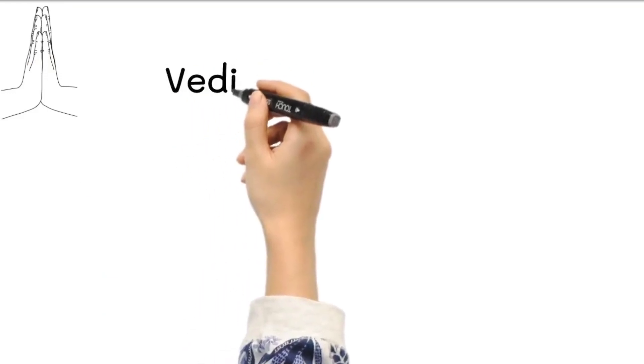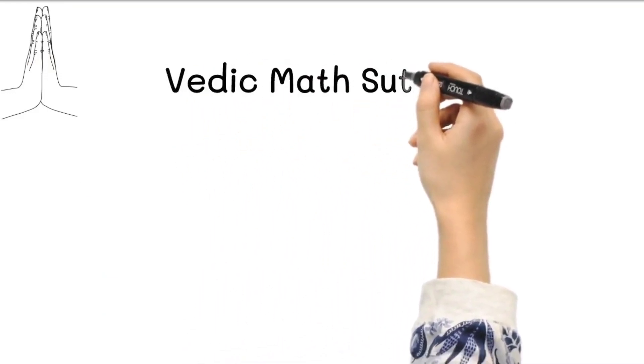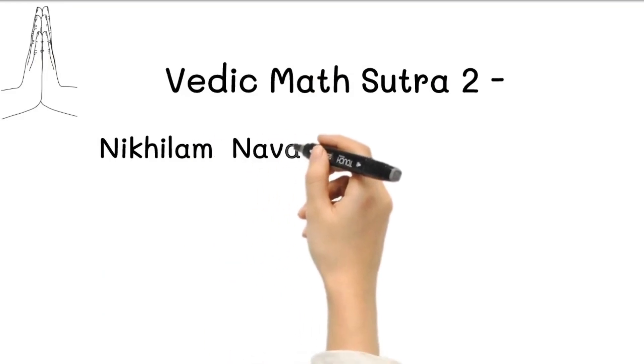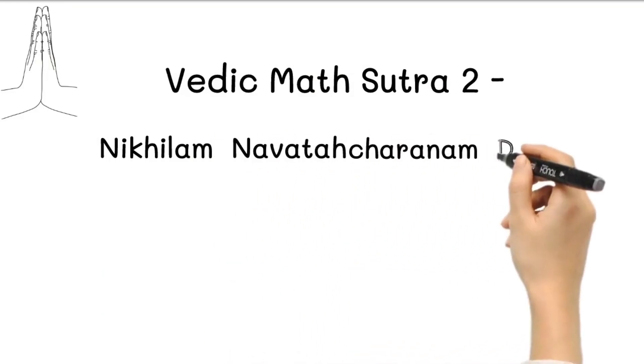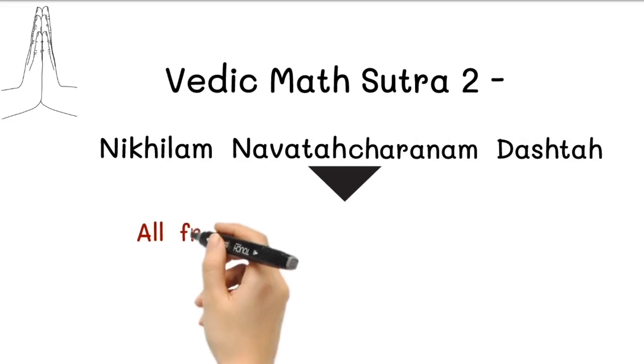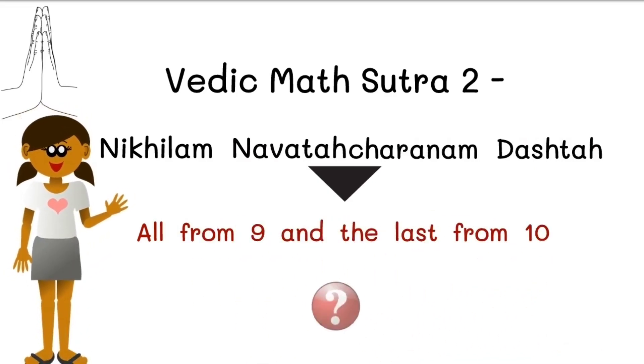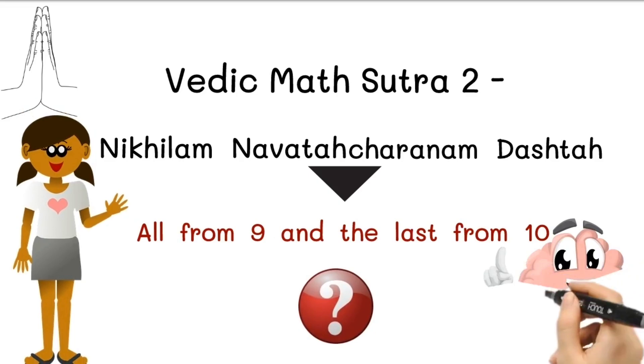Namaste everyone. Today we are going to learn Vedic Mathematics Sutra 2, which is Nikhilam Navatahcharanam Dashatah. The meaning of this sutra is all from 9 and the last from 10. Let us understand how this sutra works to simplify mathematical concepts.